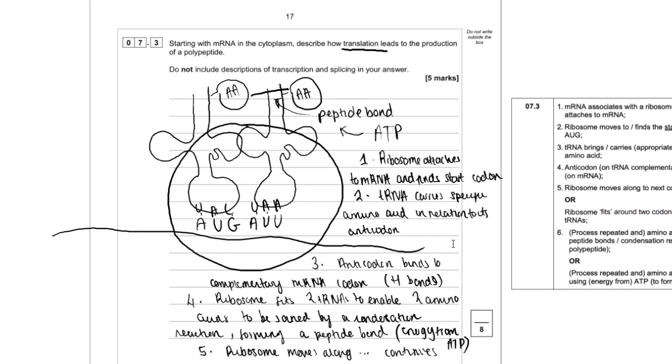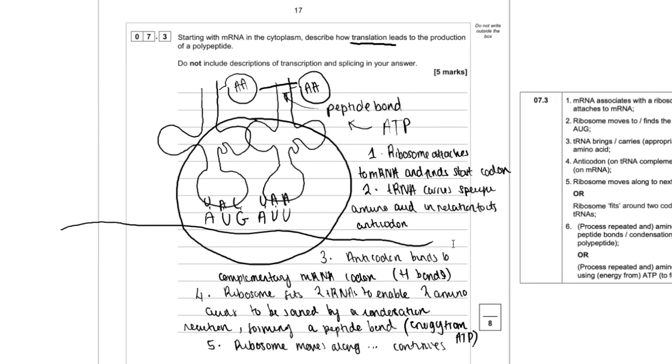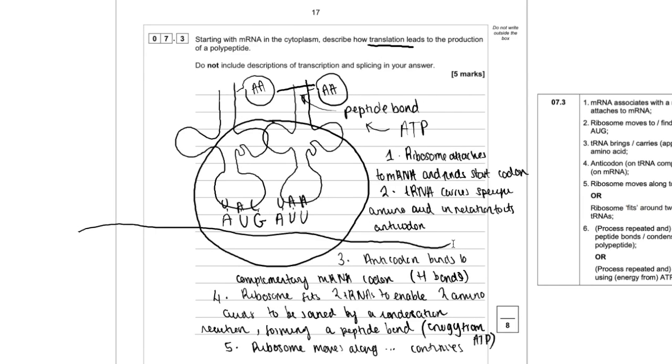This was actually quite a nice question to do with protein synthesis. Quite often, the questions about protein synthesis are asking for the role of something, and that's how it's worded on the specification. You need to know about the details of translation, but in particular, you need to know the role of a ribosome or the role of ATP or whatever. So bear that in mind in your revision. Just make sure you're able to answer those types of questions too.